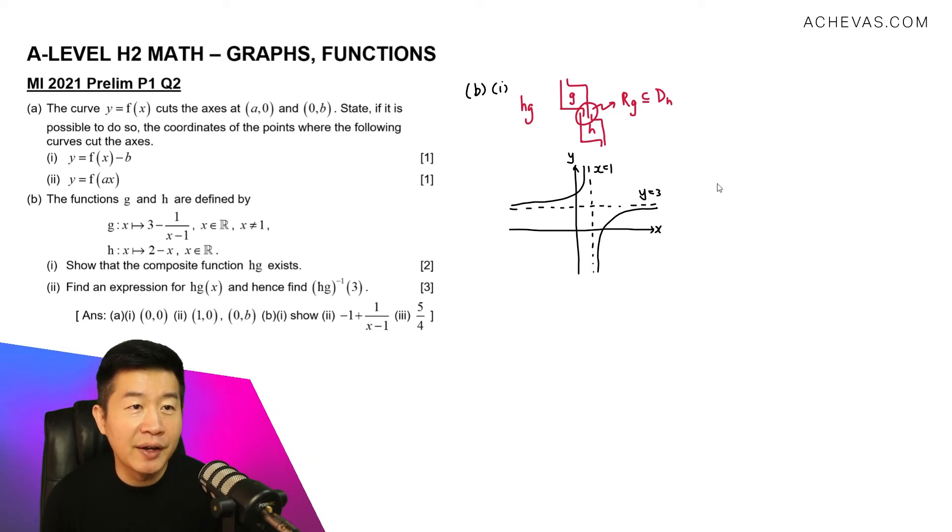Okay, so based on my graph, we can then now read the range of g. It is all the possible y coordinates on this curve. So it's going to be from minus infinity to 3, but not inclusive of 3, and from 3 all the way until infinity. This represents for us the range of g.